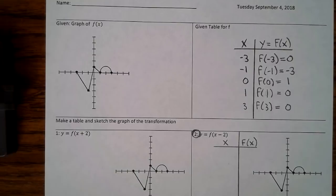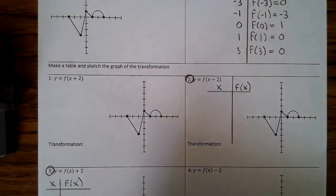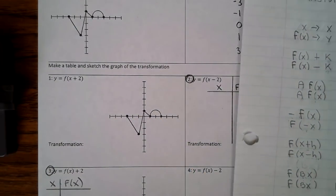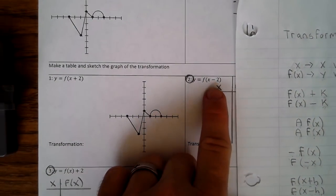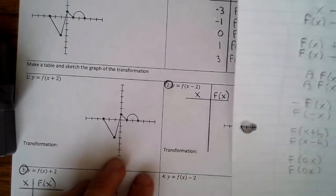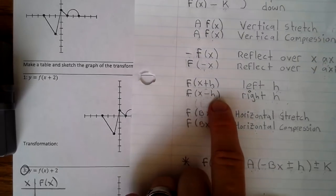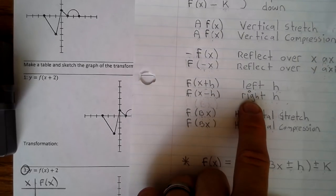Alright. So I'm going to go over a couple problems that should help you complete the assignment. Now, keep in mind, you can use your notes to help you. So here, I see this. So I'm looking for something like it. Aha. I have it right here. So I have f(x - h). That means my transformation should be right h units.